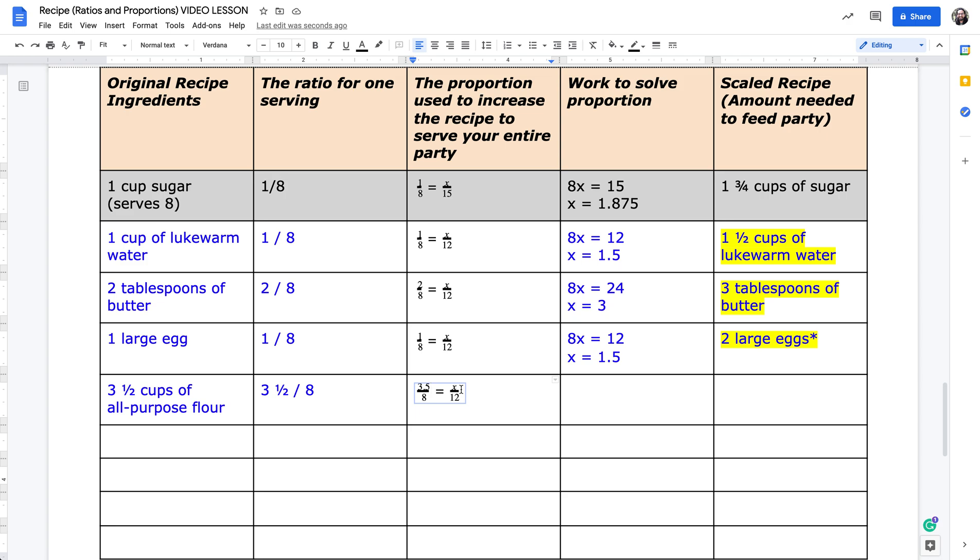So 8 times x is 8x, 3.5 times 12, that's 42. So we have 8x equals 42, divide both sides by 8, that's x equals 5.25. Again, if we convert this to a fraction, this will be 5 and 1 quarter cups of all-purpose flour.